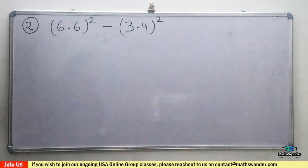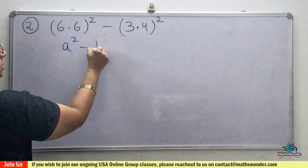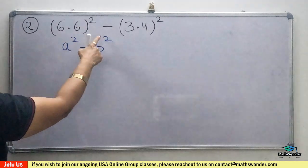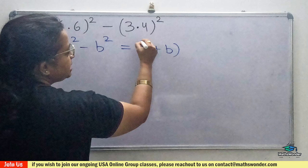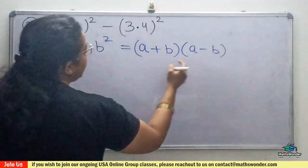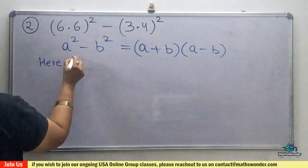So the same identity we will use: a² - b². The a² - b² identity is (a + b)(a - b). Here, what is your a?